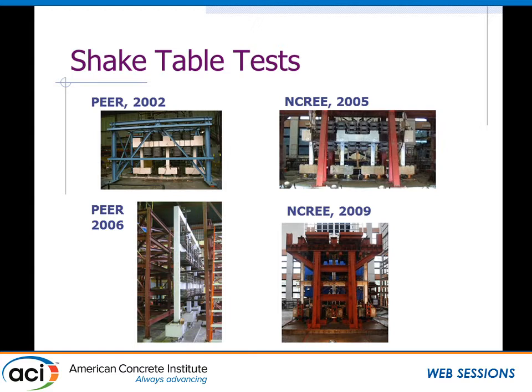I've shown four here to highlight a few features of these tests. You might think we're testing steel frames, but that's just to catch these concrete frames from landing on the table and damaging equipment, because almost all of these tests are tested right to collapse. For the top two, you've got a very large concrete beam on top — essentially fixed-fixed columns, just one story frame. For the bottom two cases, you've got a frame with flexible beams, and the available interstory drift data is affected by those flexible beams.